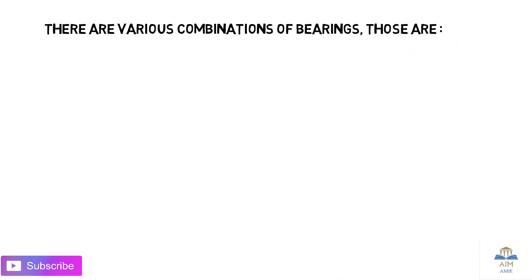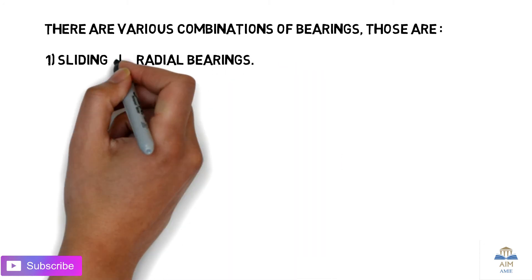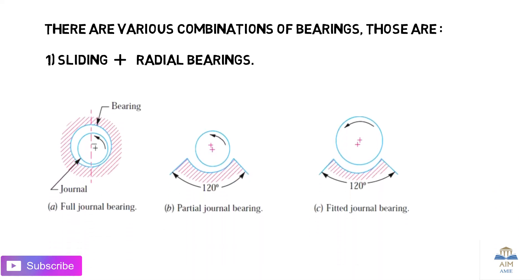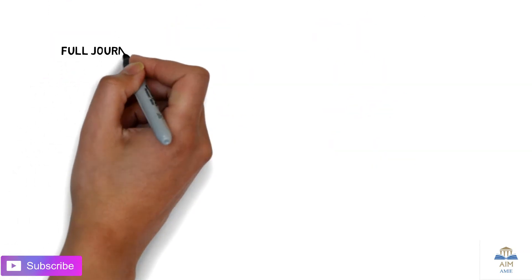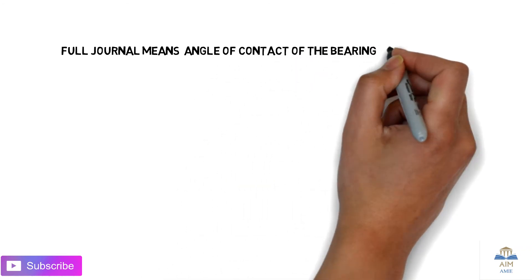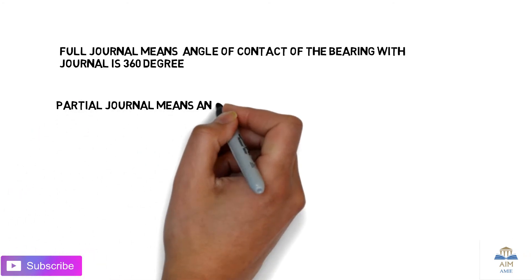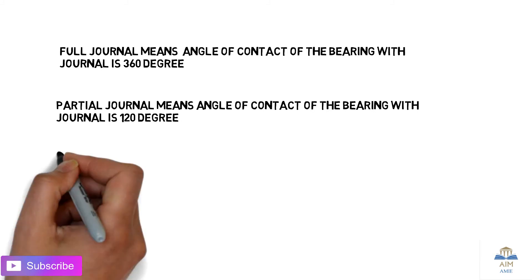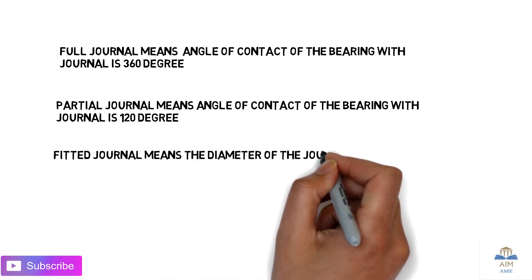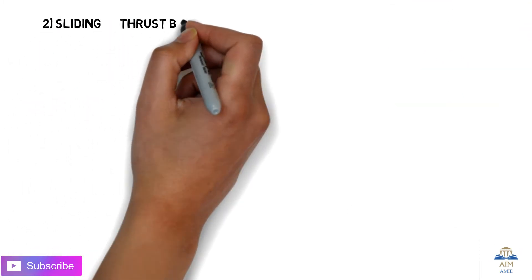There are various combinations of bearings. The first combination is sliding plus radial bearing. This includes: (A) full journal bearing — where the angle of contact of the bearing with the journal is 360 degrees; (B) partial journal bearing — where the angle of contact is 120 degrees; and (C) fitted journal bearing — where the diameter of the journal and bearing are equal, meaning there is no clearance between them.